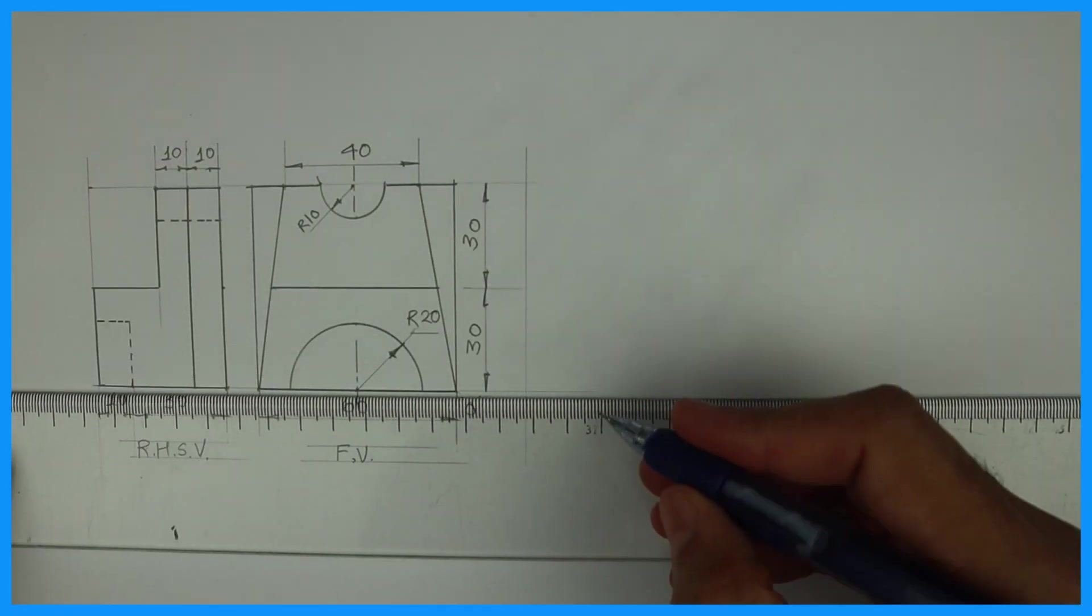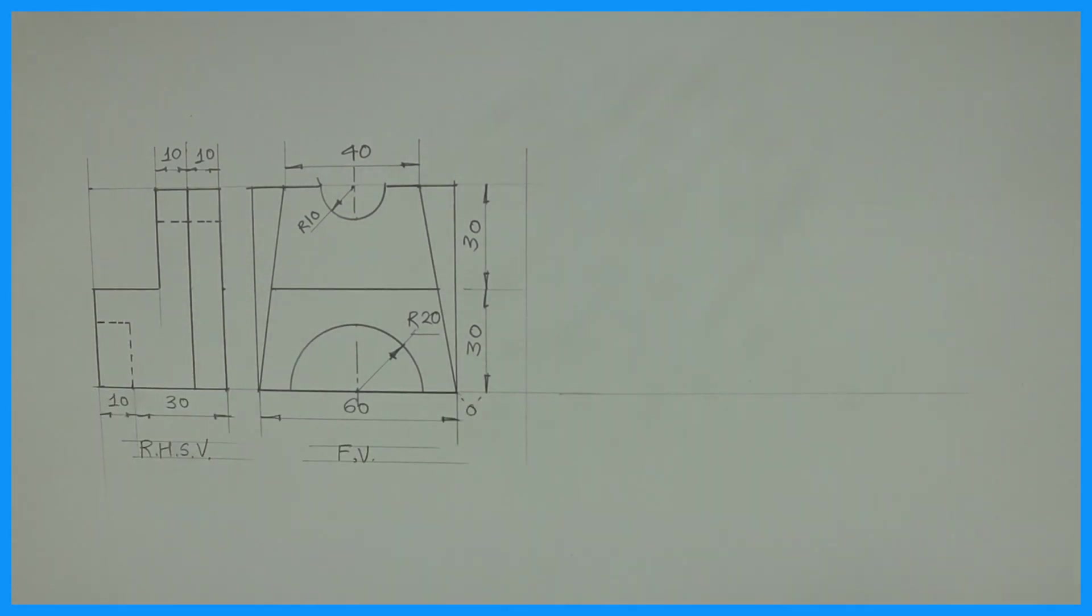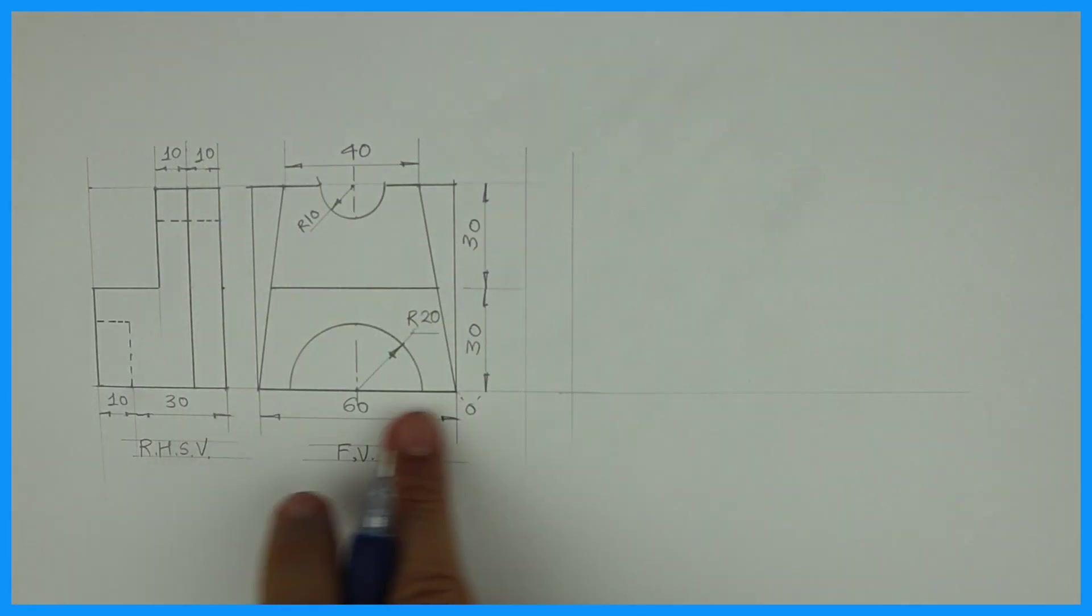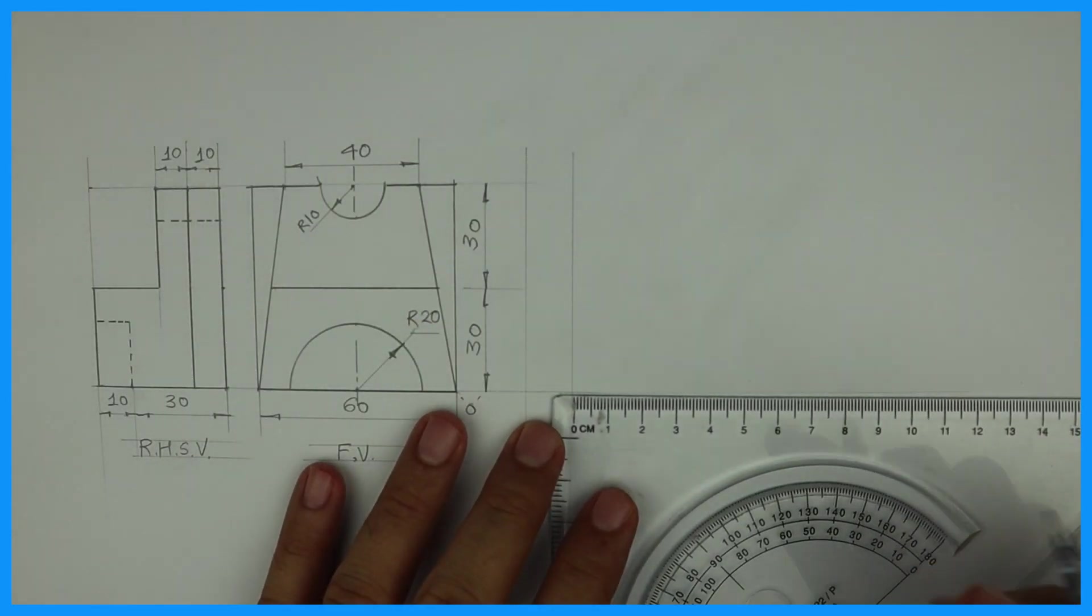So first I will draw a box where I will draw front view. See this length is 60.